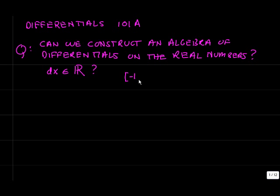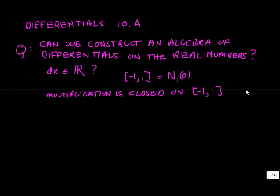So let's take a look at a set of small numbers. Let's look at the closed interval minus 1 to 1. Look at its algebraic properties. First of all, if you multiply, let's call this set N_1(0). So it's a neighborhood of 0 of size 1. Well, if you multiply any two numbers in this interval, you get another number in the neighborhood N_1. So multiplication is closed on the set N_1.